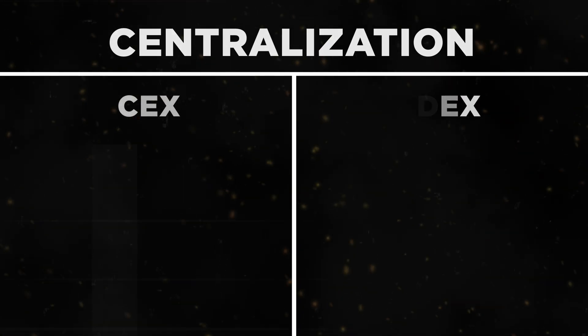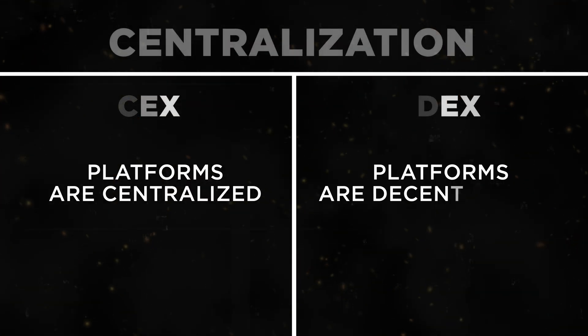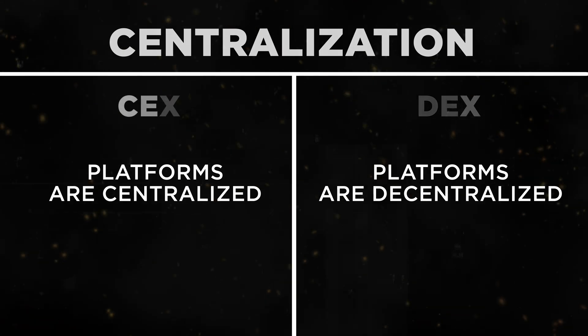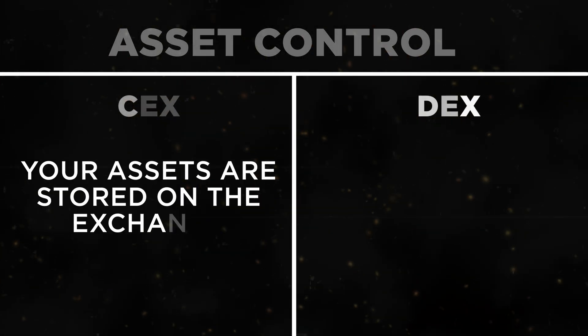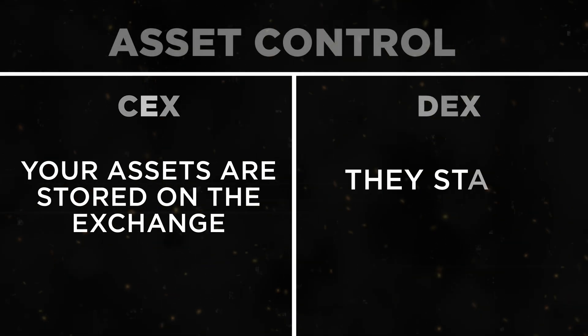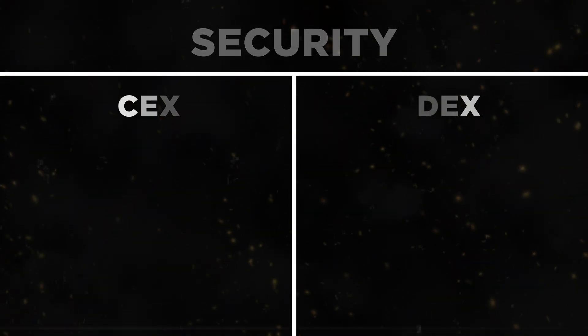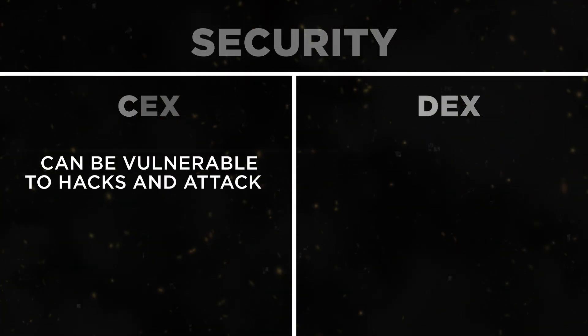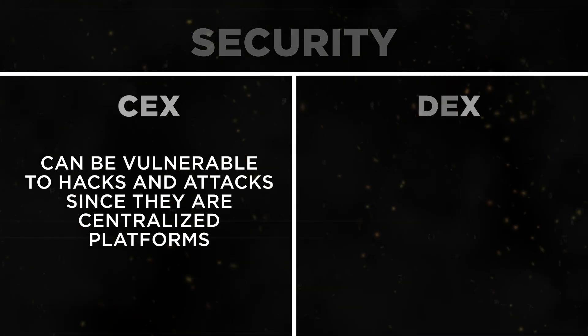So how do DEX and CEX differ? Let's break it down. Centralization: CEX platforms are centralized while DEX platforms are decentralized. Asset control: on CEX your assets are stored on the exchange; on DEX they stay in your wallet.